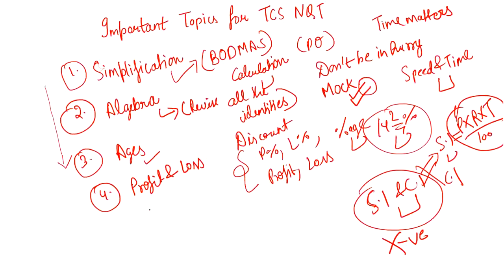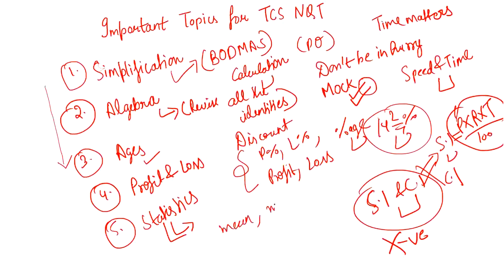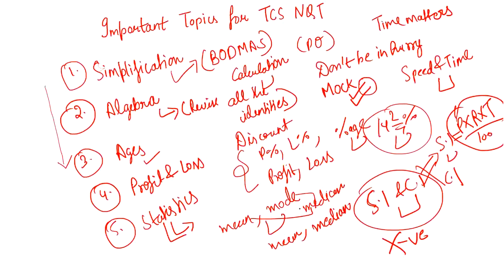After Profit and Loss, the next topic you should cover is Statistics. Questions from statistics were also present in both the October and February exams. They can ask about mean, mode, and median — for example, they may provide the mean and mode and ask you to find the median. You should be aware of the relationship between mean, median, and mode, and know the basic formulas for calculating median. Just knowing how to calculate mean, median, and their relationship is sufficient.